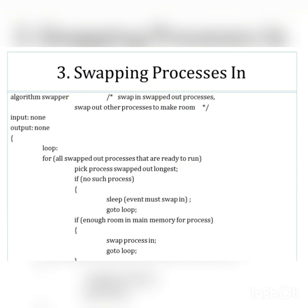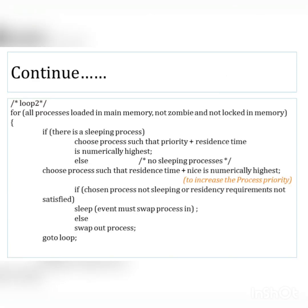Now let's see the algorithm for swapping a process in. A loop continuously iterates over all swapped-out processes that are ready to run. It picks the process that has been swapped out the longest. If no such process exists, it sleeps and returns to the loop. If there is enough room in main memory, it swaps that process in.